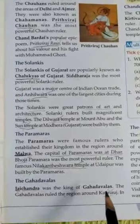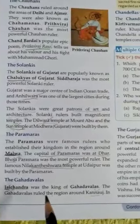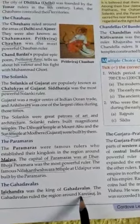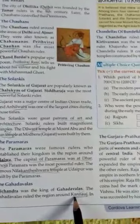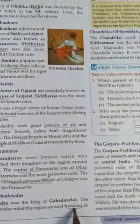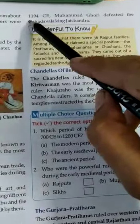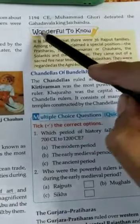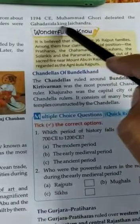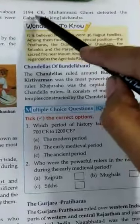The Gahadavalas — Jay Chandra was the king of the Gahadavalas. The Gahadavala rulers ruled the region around Kannauj. There was quite a fight for control over the Kannauj area. In 1194, Muhammad Ghori defeated the Gahadavala king Jay Chandra.